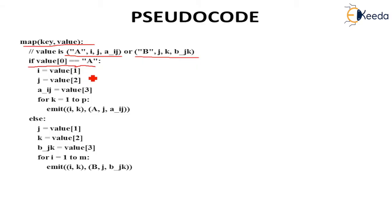For K equals 1 to P, we emit two things: I,K as the key and the value will be A,J,A(i,j).